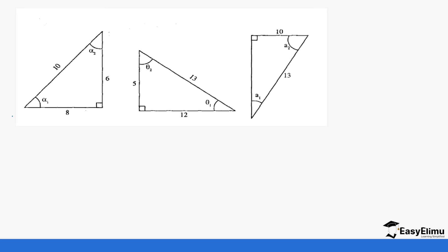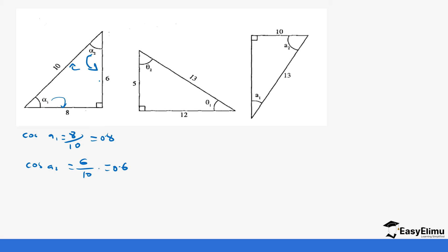If we look at the cosine of angle alpha 1, it's going to be the adjacent which is 8 over the hypotenuse which is 10, which gives us 0.8. You can also move to another angle: the adjacent of that angle is 6 over the hypotenuse which is 10, so cosine of alpha 2 is 6 over 10 which gives us 0.6.